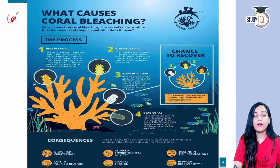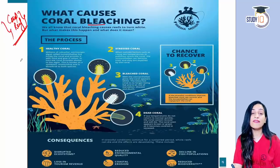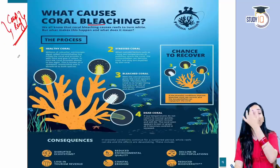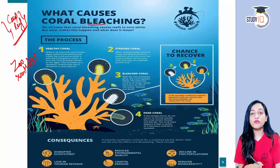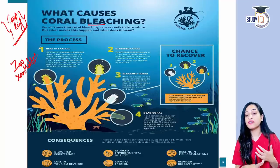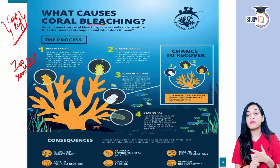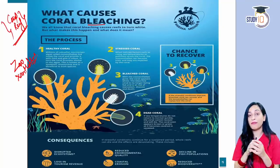We have previously made a video on coral bleaching. A healthy coral is colored because of an algae called zooxanthellae. Zooxanthellae provides food for corals through photosynthesis. However, due to climate change, corals become stressed, causing the algae to become toxic. The corals then expel the algae.